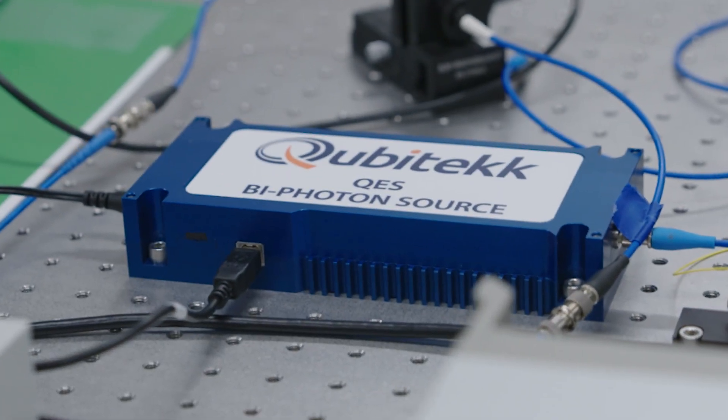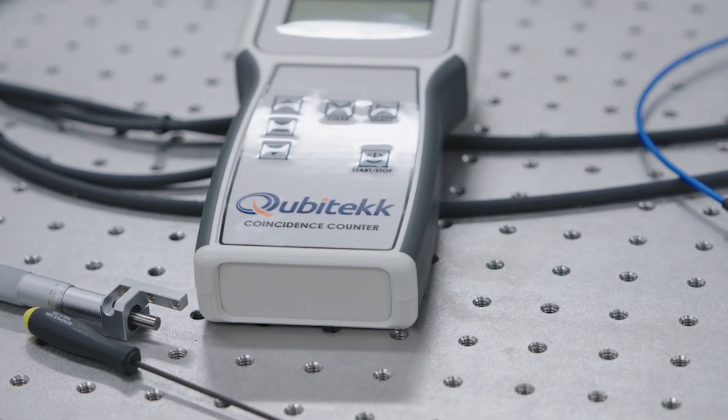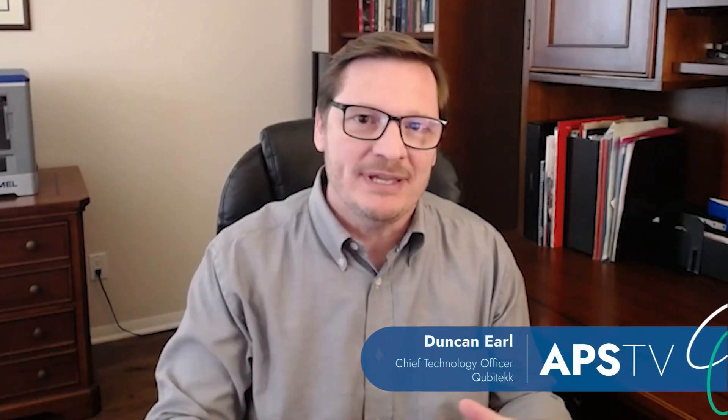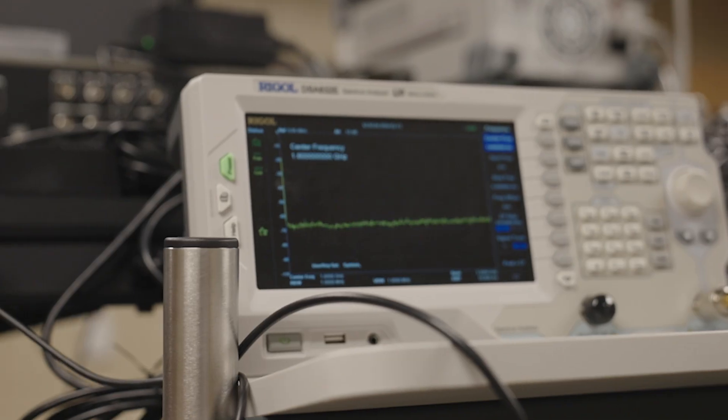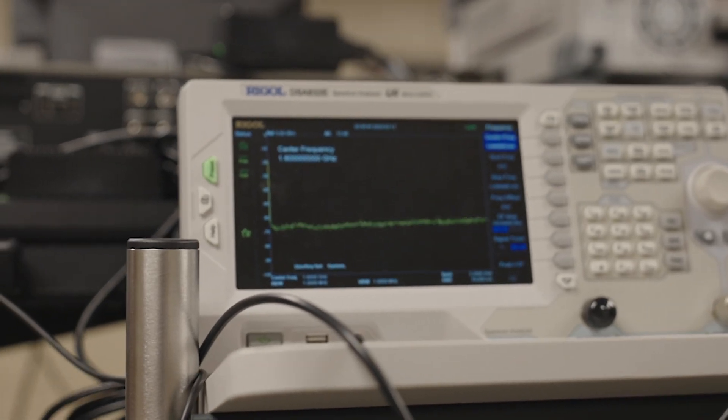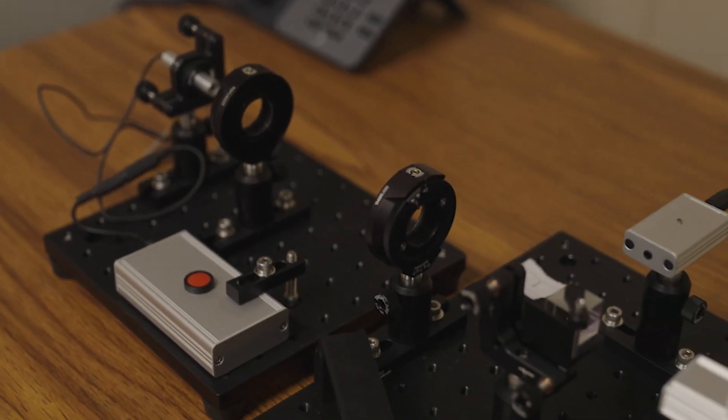Cubitech teamed with EPB to develop the EPB quantum network. It enables UTC to ultimately deploy distributed quantum sensors, to explore distributed quantum sensing, and to look at quantum information security applications using the network.